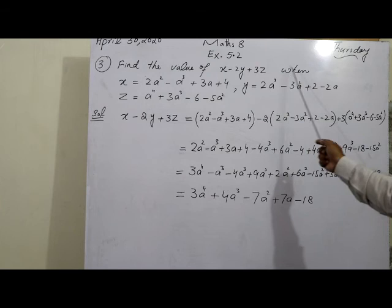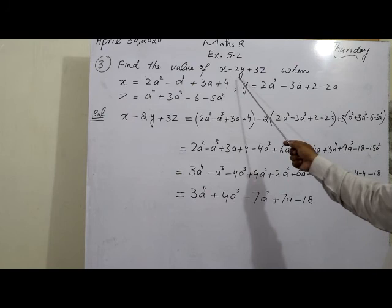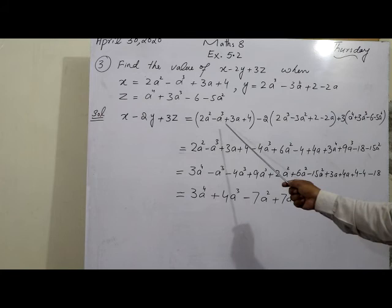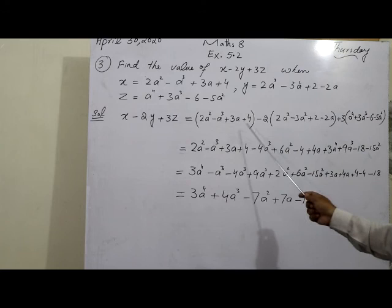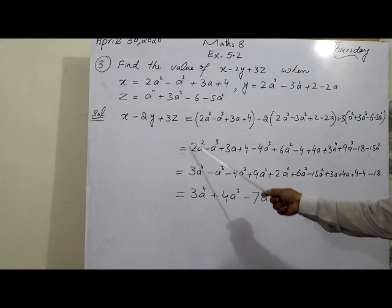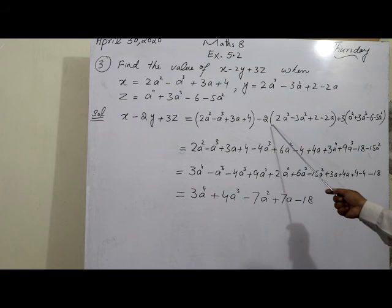Question 3: Find the value of x - 2y + 3z, where x, y, and z are given expressions. This means substitute the expressions for x, y, and z — multiply the y-expression by minus 2 and the z-expression by 3, then add everything. We write: x (its expression) minus 2 times the y-expression, plus 3 times the z-expression.